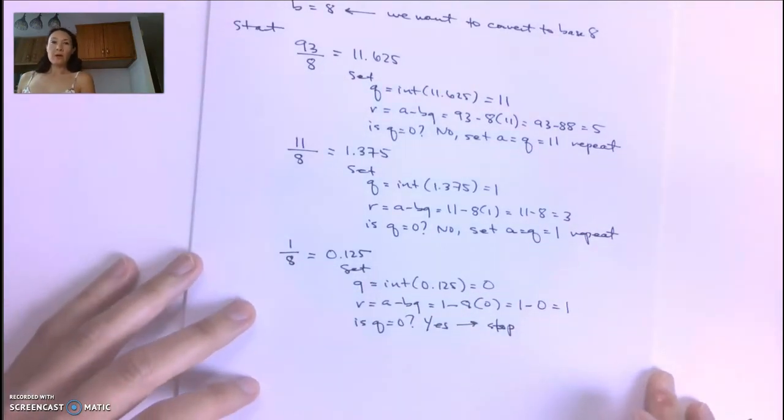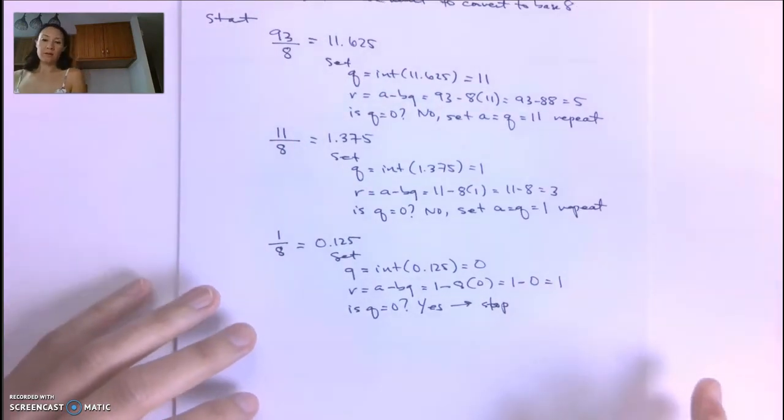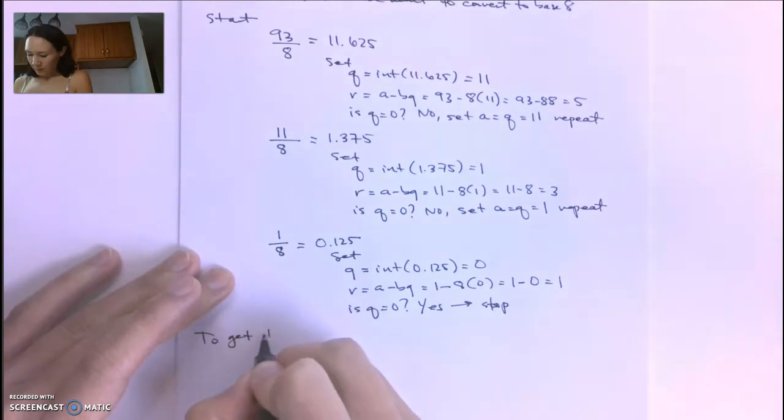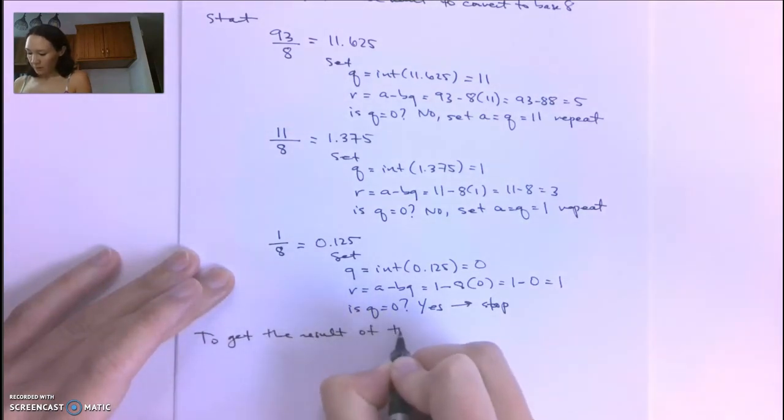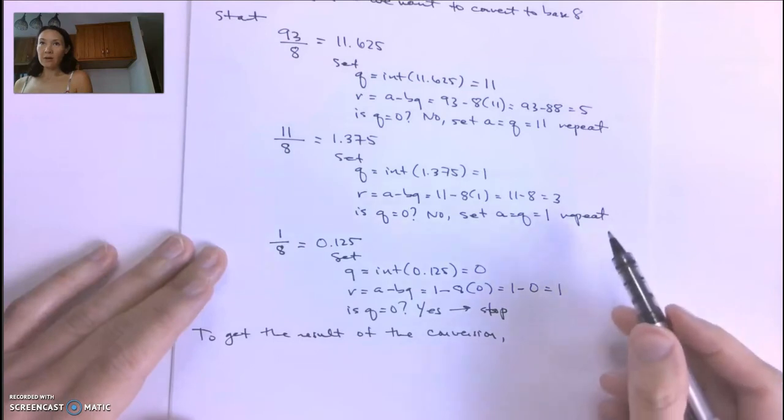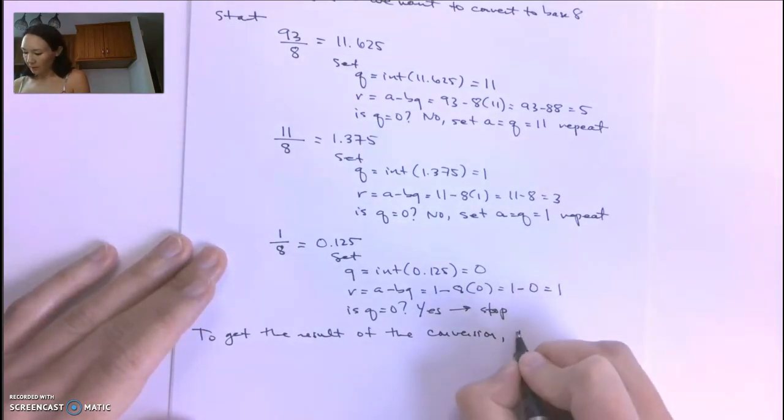To get the result of the conversion, we collect all the remainders from bottom to top.